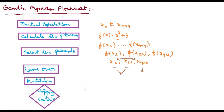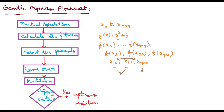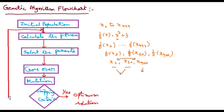If this is satisfied, that is the optimum solution. Otherwise, we need to go back to the previous step. If it is not satisfied, I need to calculate the fitness again and go back to that step. That's all — this is the simple flowchart.